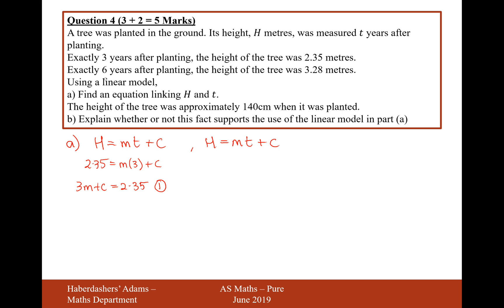Plugging in the second bit of information here, that's going to be 3.28 equals m lots of 6 plus c. Or in other words, we could write it as 6m plus c equals 3.28.